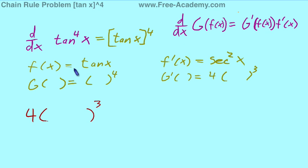Our f of x goes inside the parentheses, so that's still tangent of x. And this all gets multiplied by our f prime of x, secant squared x.